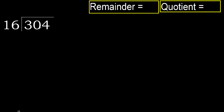304 divided by 16. 3 is less, therefore next. 30 is not less, therefore work with 30.